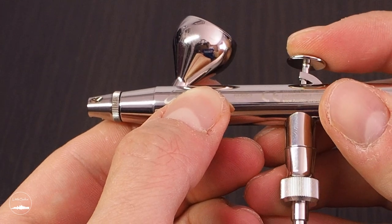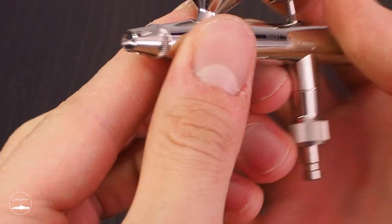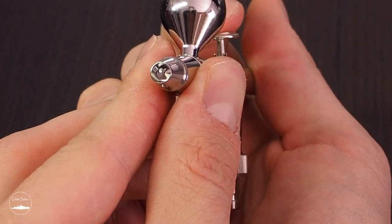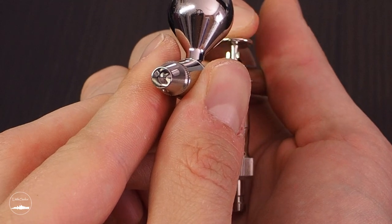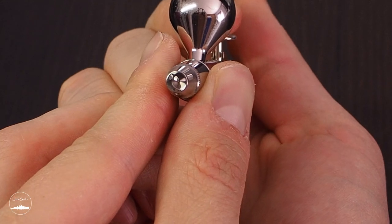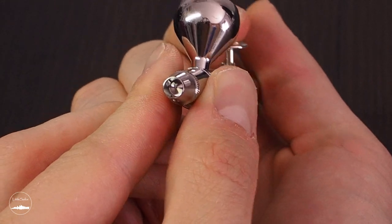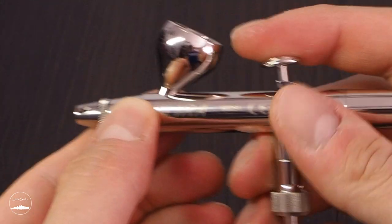The paint in the container at this stage cannot get out of the device. Only when we pull the trigger backwards and thus the needle located inside, the paint falls into the air stream that causes it to spray and eject from the airbrush. Efficient operation of the trigger and of course appropriate dilution of the paint provides amazing control over obtaining perfect coverage and shading.